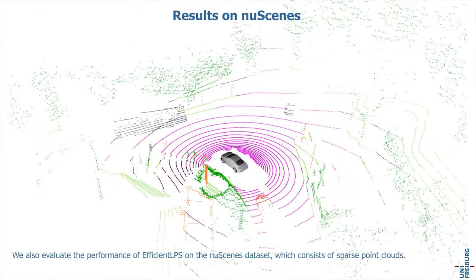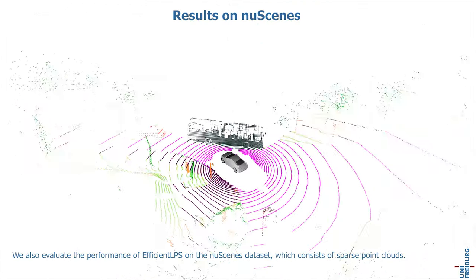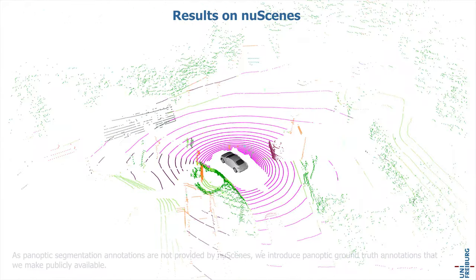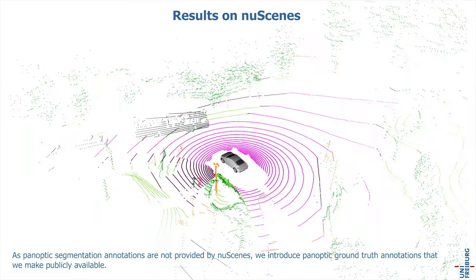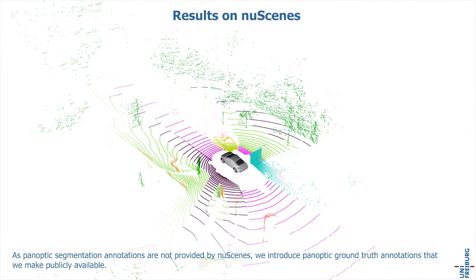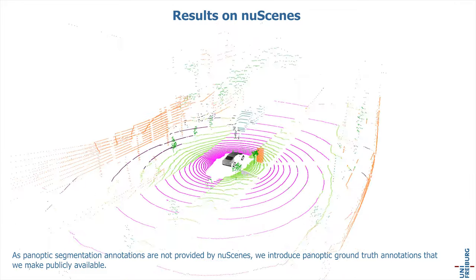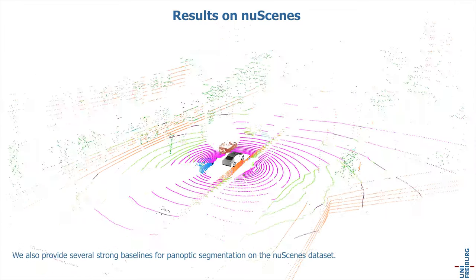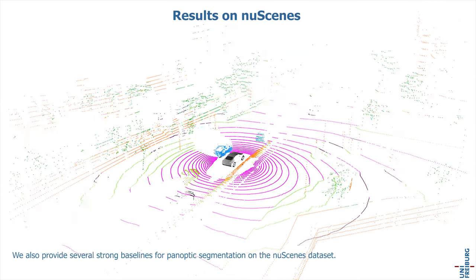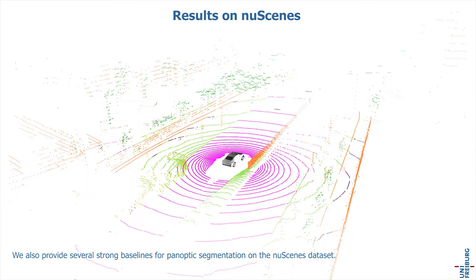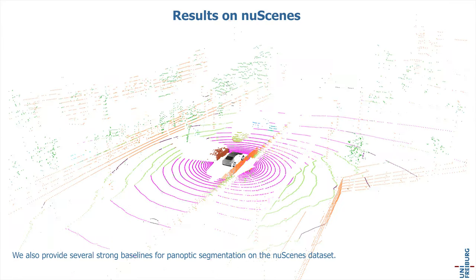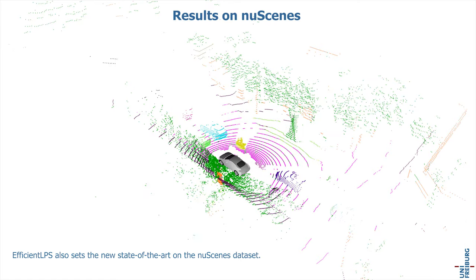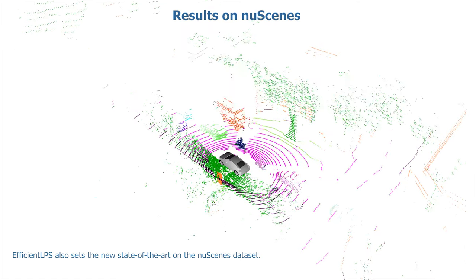We also evaluate the performance of Efficient LPS on the nuScenes dataset, which consists of sparse point clouds. As panoptic segmentation annotations are not provided by nuScenes, we introduce panoptic ground truth annotations that we make publicly available. We also provide several strong baselines for panoptic segmentation on the nuScenes dataset. Efficient LPS also sets the new state of the art on the nuScenes dataset.